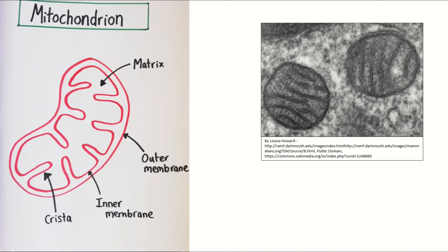The inner membrane is folded into cristae, which gives it a large surface area for respiration to take place. The inside of the mitochondrion is filled with a liquid called the matrix, and this also contains lots of enzymes that are needed for respiration.